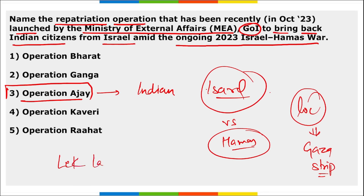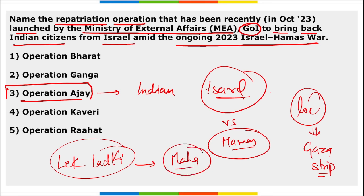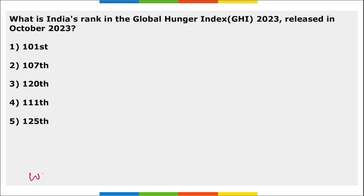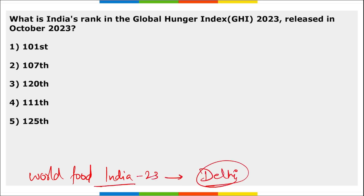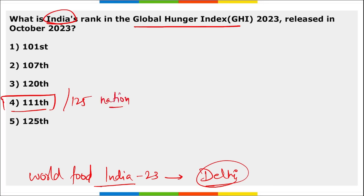The Lek Ladki scheme was launched by the Maharashtra government. The World Food India 2023 summit was organized in Delhi. India's rank in the Global Hunger Index 2023 is 111 out of 125 nations. In 2022, India's rank was 107, and in 2023 it dropped to 111.